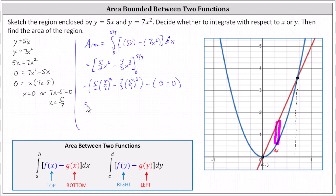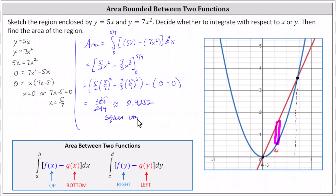Simplifying, the exact value is 125 divided by 294, and the decimal approximation is approximately 0.4252. This is area, so the units are square units. The area bounded by the two functions is exactly 125/294 square units. I hope you found this helpful.